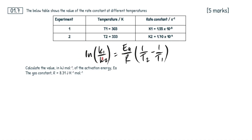We're given a format of the Arrhenius equation right here, and we need to calculate the value in kilojoules per mole of the activation energy EA. And we're given the gas constant as always.